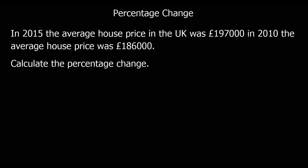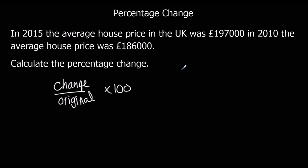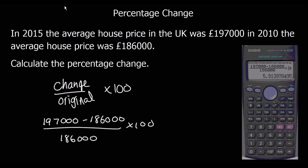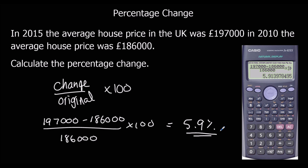Why don't you try this one? Pause the video and give this one a go. You've got to use the same formula: change over original times 100. So the price now is 1,970,000, take away the original, over the original, times 100. Type it into the calculator, and to one decimal place we get 5.9% — a 5.9% increase.